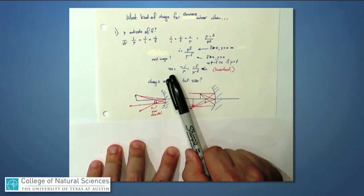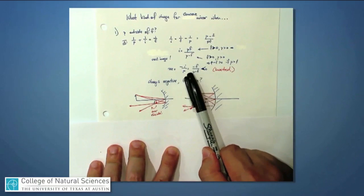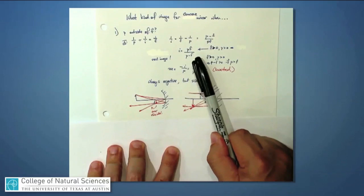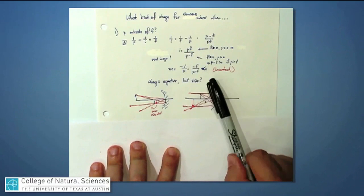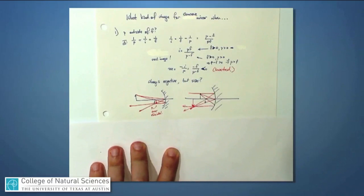And I also expect that the magnification, which is minus i over p, if I put in minus i over p, I get minus f over p minus f. I always get that to be negative, it's less than zero, so that the image is inverted.